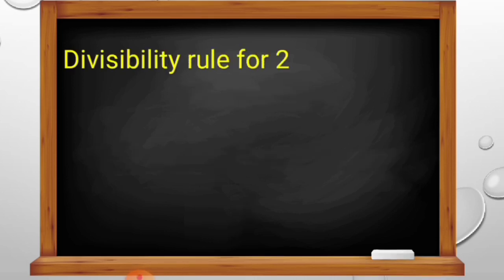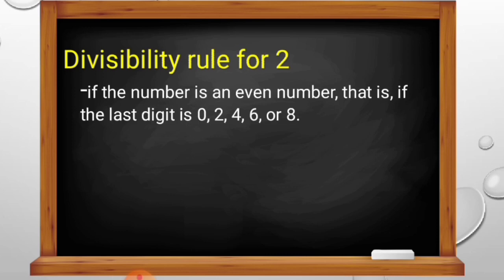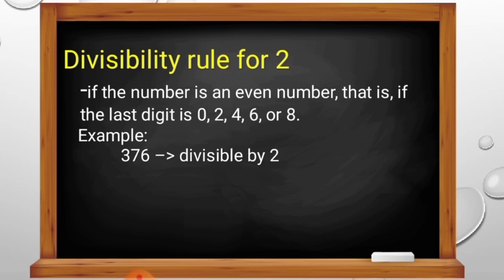Now, let us learn the divisibility rule for 2. If the number is an even number — that is, if the last digit is 0, 2, 4, 6, or 8 — then the number is divisible by 2. For example, take a look at your learning activity sheet in mathematics 5. The given example there is 376. The last digit of 376 is 6, and 6 is an even number. Therefore, 376 is divisible by 2.